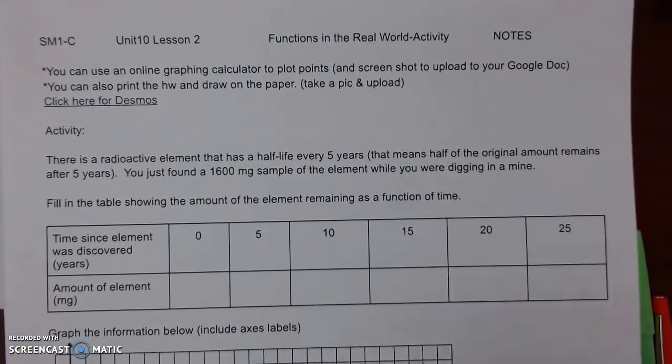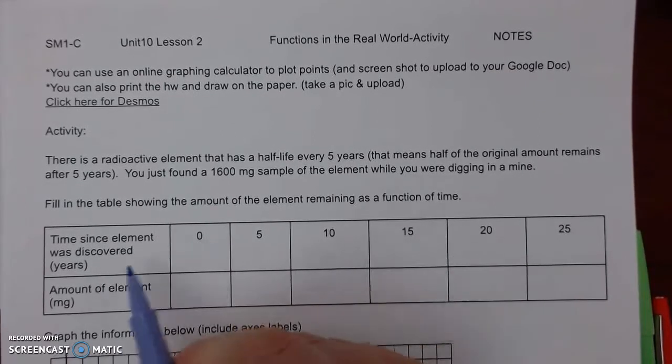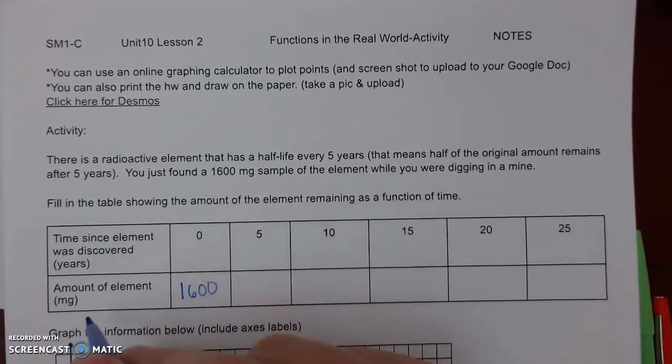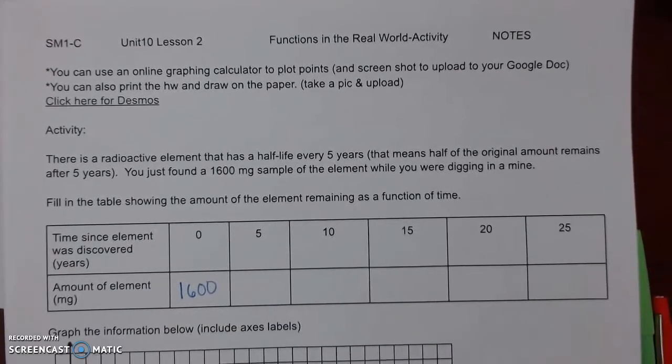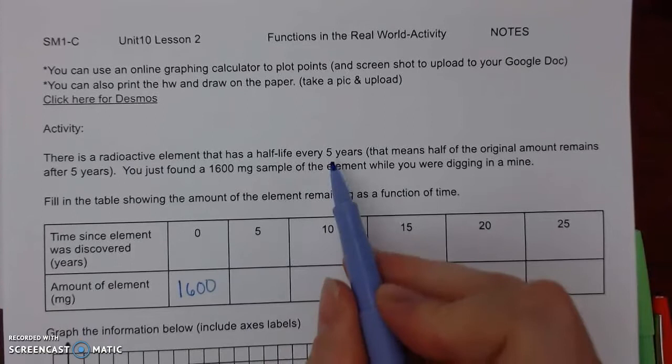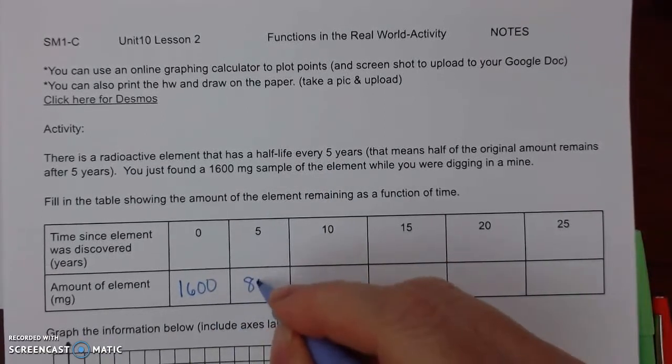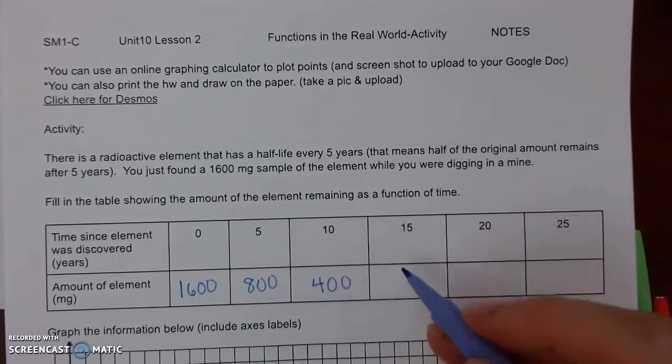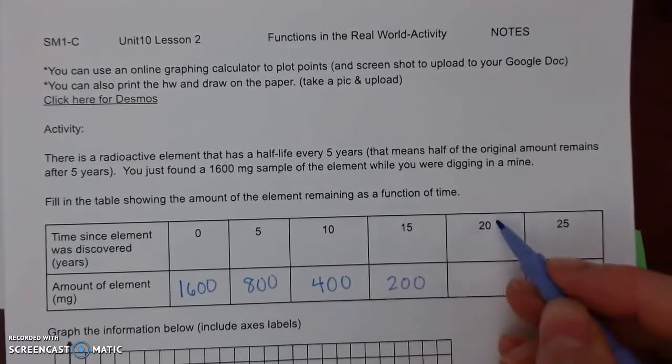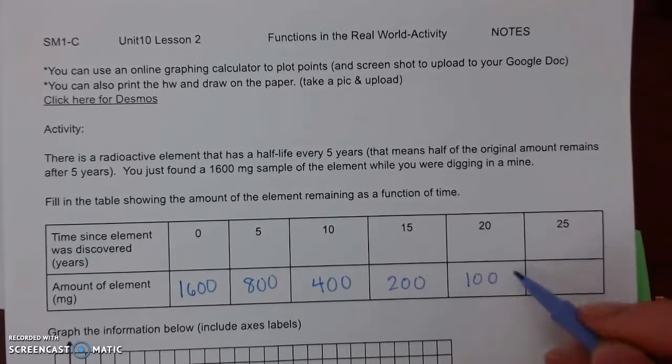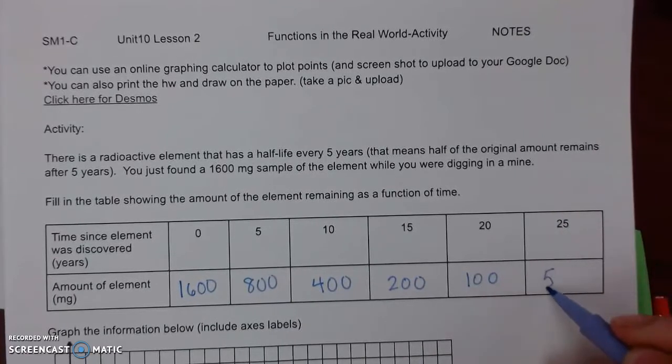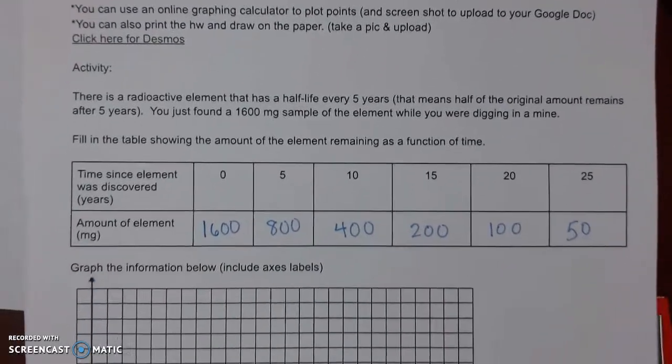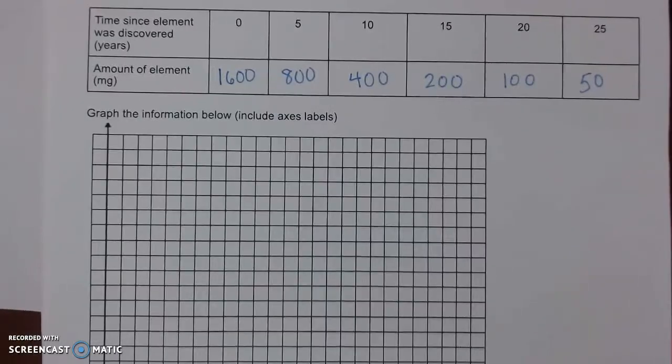So fill out our table. Zero years since it was discovered means we're going to start with 1600 milligrams. Then five years later, that's the half-life, so I have half of that. Then five years later, half. Five years later, half. Five years later, and five years later. You can keep going if you have decimals; that's fine as well.